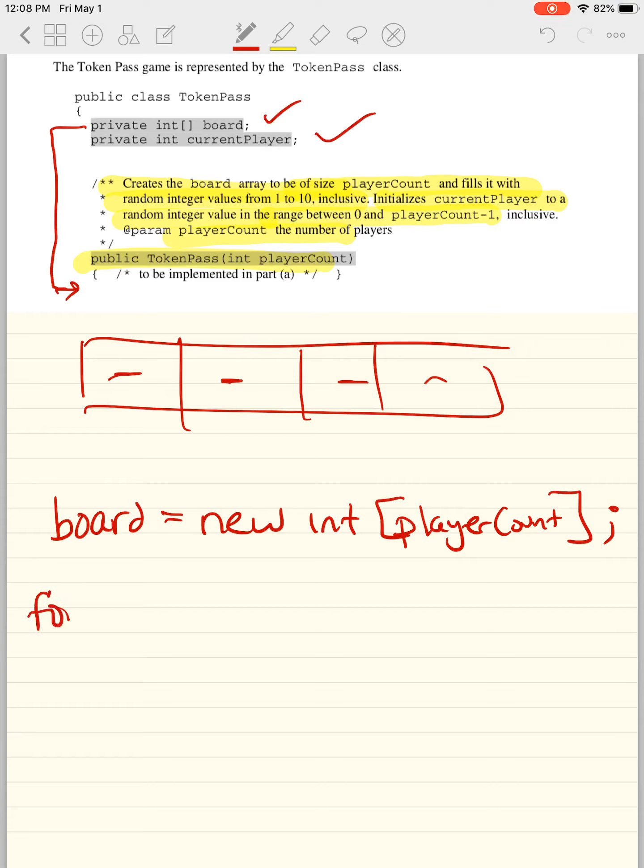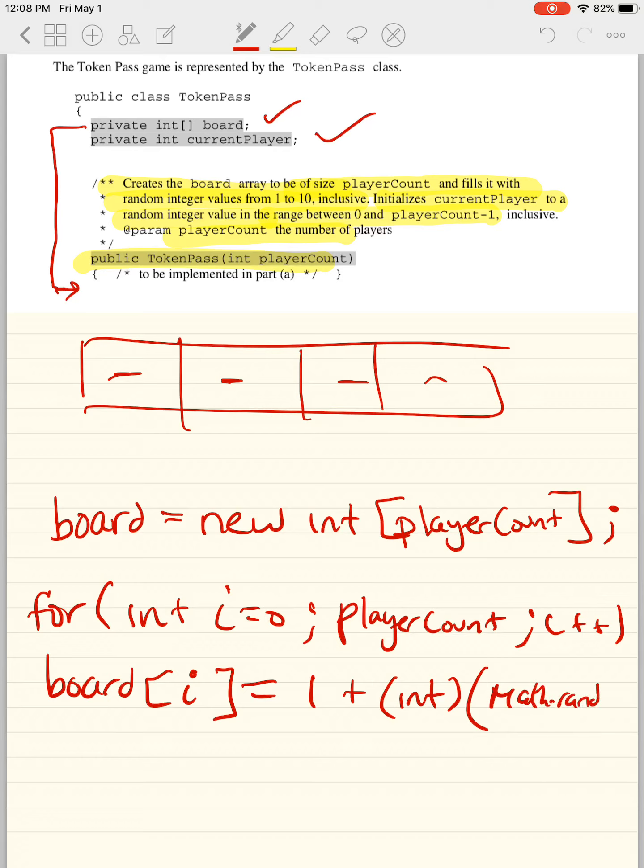All right, so we need a for loop. Int i equals zero. I is less than, you can do player count. You could do board.length. I'll just do player count. I plus plus. And we're going to give every single person a token. And I taught you already how to math.random times 10. Okay, math.random is a method, so it should have parentheses after it. So what happens here is at int i equals zero, he's going to get a number between one and 10. At i equals one, and these are going to be the tokens.